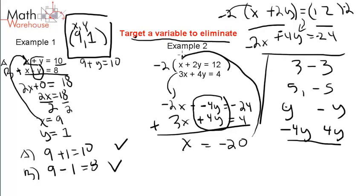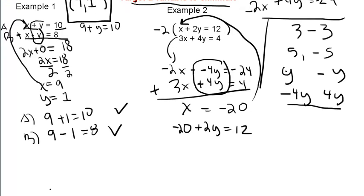I'm liking the top equation here. We've got negative 20 plus 2y equals 12. Let's add 20 to both sides. Gives us 2y equals 32. Divide both sides by 2, y equals 16.